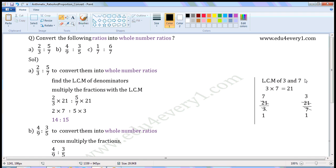3 and 7 do not have any common prime factor. So they are relatively prime or coprime. So LCM of 3 and 7 is equal to 3 × 7 = 21.